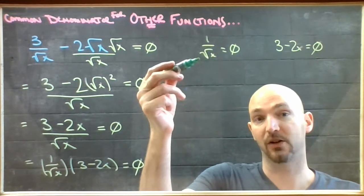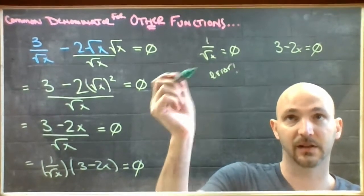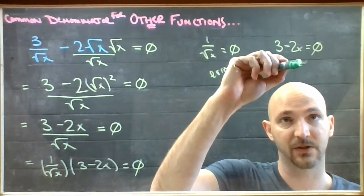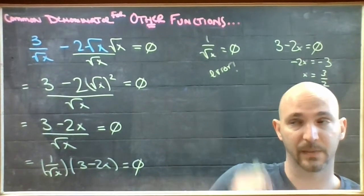You can't get a 0 by dividing, so this case is empty. We have an error here. And this one's reasonably easy to solve. Negative 2x equals negative 3, so x would be 3 halves.